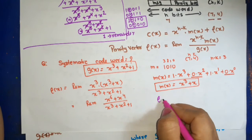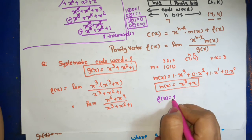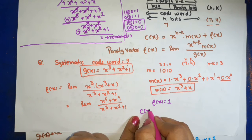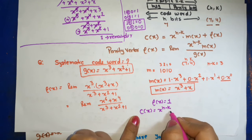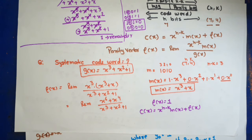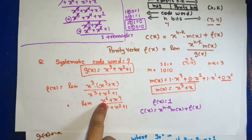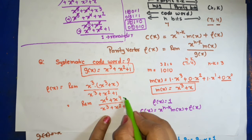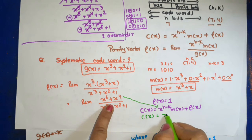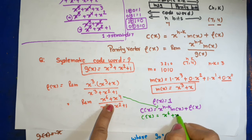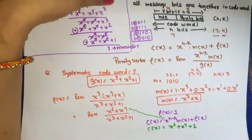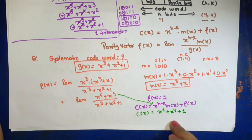Now we write this remainder value. So ρ(x) = 1. We now substitute into C(x) = x^(n−k)·m(x) + ρ(x). That gives: C(x) = x⁶ + x⁴ + 1. This is our code word polynomial.